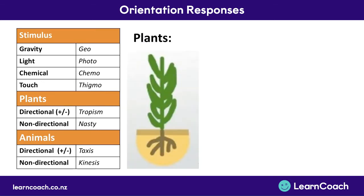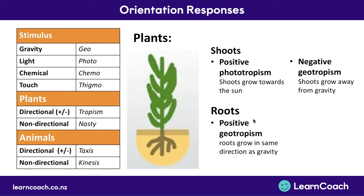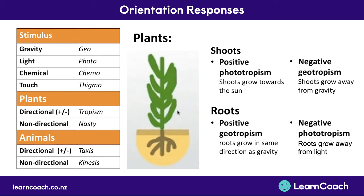Let's cover the key points for plants. For shoots: they show positive phototropism — shoots grow towards the sunlight — and negative geotropism — shoots grow away from gravity. For roots: they show positive geotropism — roots grow in the same direction as gravity — and negative phototropism — roots grow away from light. When naming these responses, join together the name of the stimulus (geo, photo, chemo, or thigmo) with the response type (tropism for directional plant responses). Always include positive or negative at the start if it's a directional response.